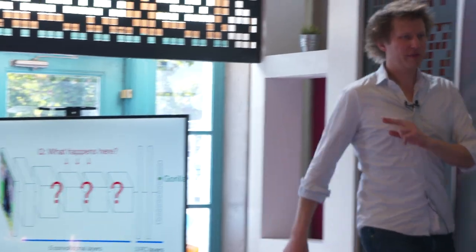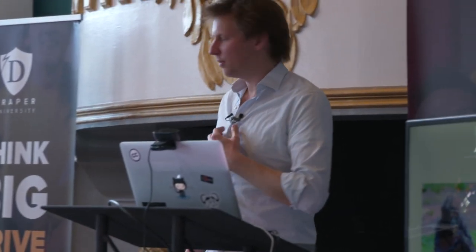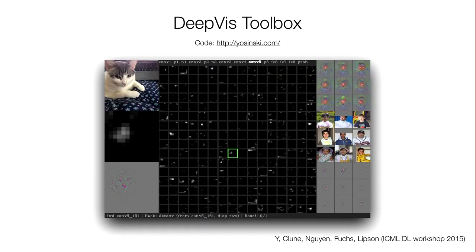I'm going to show you some cool stuff about how we can start to understand this. The very first way we can try to understand what happens in the middle of the network is just to plot it. I'm going to show you this little toolbox we've written called the Deep Viz Toolbox — you can actually download it yourself and try it if you'd like. I'll show you a quick demo now.